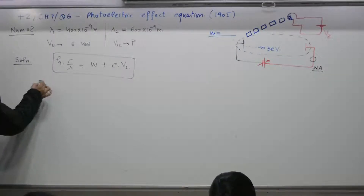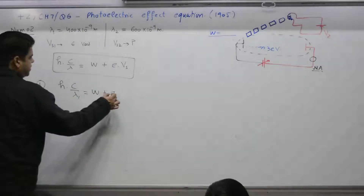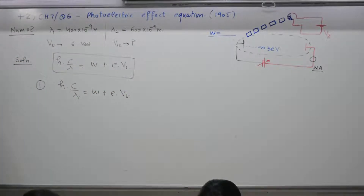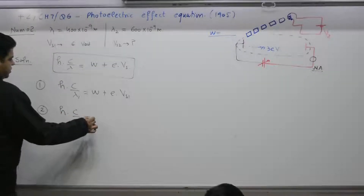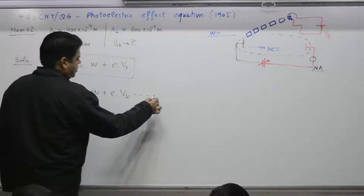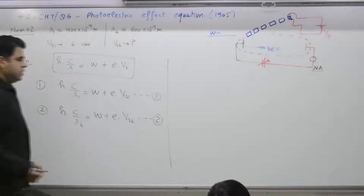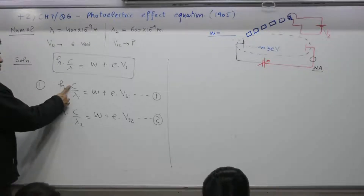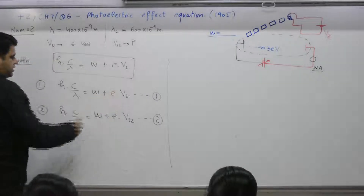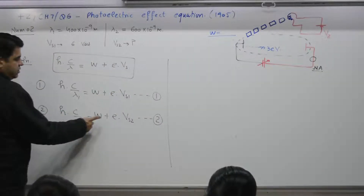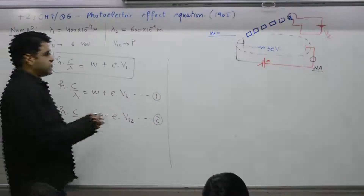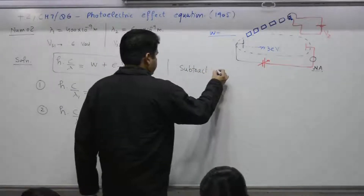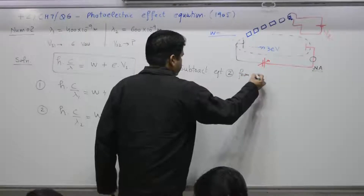First case: h·c/λ₁ = work function + e·V_s1. Second case: h·c/λ₂ = work function + e·V_s2. Now you have two equations. Given: h, c, λ₁, V_s1, e — all known. In the second equation, V_s2 is what you need to find out. Subtract equation 2 from equation 1 to eliminate the work function.